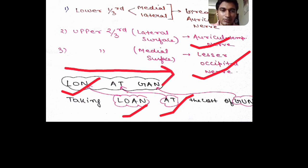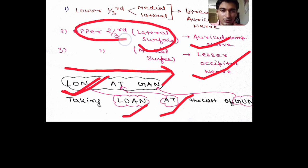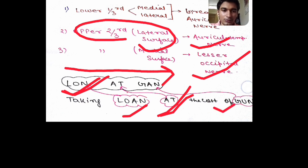We are moving from the medial surface to the lateral surface. So the upper two-thirds of the medial surface is LOAN — lesser occipital nerve. Then AT — auriculotemporal nerve — covers the upper two-thirds of the lateral surface. And GUN — greater auricular nerve — covers the lower one-third of both the medial and lateral surfaces.